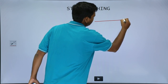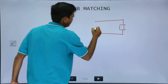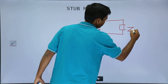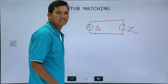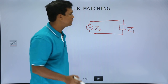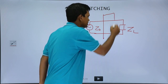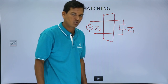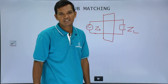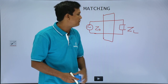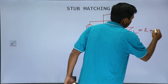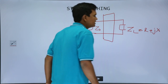Let me draw the transmission line. In the previous case of the quarter wave transformer, when we try to match impedance we introduce something in between called a matching unit — a quarter wave transformer. But there we can only match if the load impedance is resistive. What will happen if the load impedance is complex, let us say R plus jX — some complex impedance?